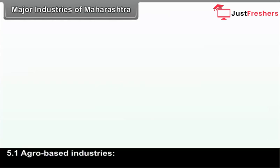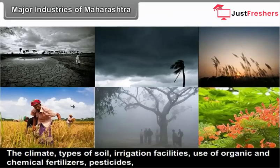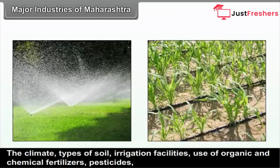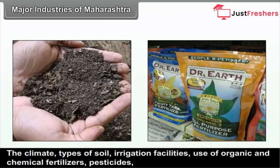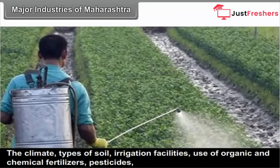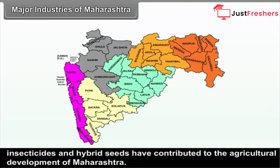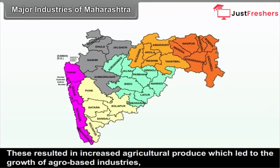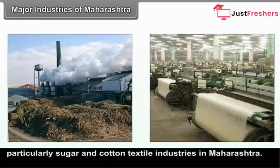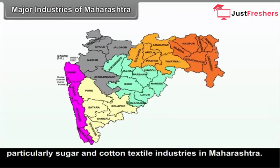The climate, types of soil, irrigation facilities, use of organic and chemical fertilizers, pesticides, insecticides and hybrid seeds have contributed to the agricultural development of Maharashtra. These resulted in increased agricultural produce, which led to the growth of agro-based industries, particularly sugar and cotton textile industries in Maharashtra.